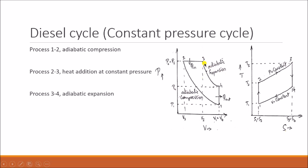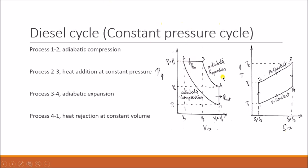The third process is process 3 to 4, adiabatic expansion. The air expands adiabatically — no heat is added or rejected during this expansion. The pressure reduces from P3 to P4 and volume increases from V3 to V4. On the TS diagram, the temperature reduces from T3 to T4, but the entropy remains the same. The fourth process is 4 to 1, heat rejection at constant volume, where the volume is kept constant and the pressure reduces to P1.